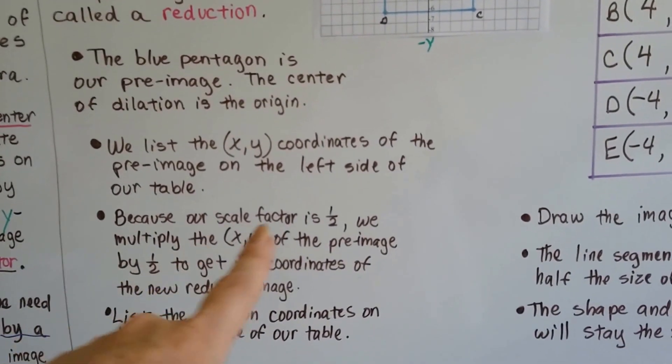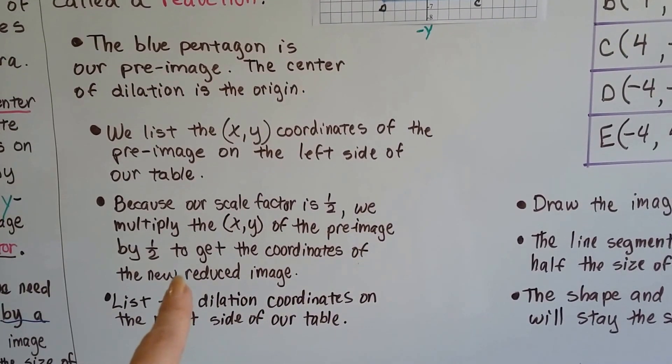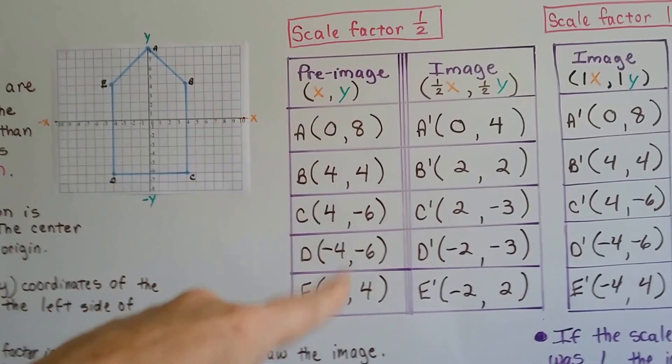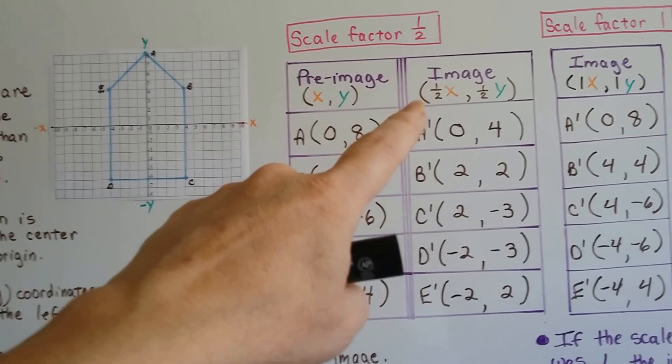And because our scale factor is half, we multiply the x, y of the pre-image by half to get the coordinates of the new reduced image. So we multiply these coordinates of pentagon a, b, c, d, e by a half.